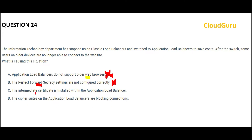Option C is talking about an intermediate certificate. Whenever we talk about a certificate, one thing that comes to mind is the TLS protocol — that is encryption in transit. But this question is not an encryption question. They are not mentioning if encryption is even in play or not. So we cannot say that this is the problem or root cause. That leaves us with one option.